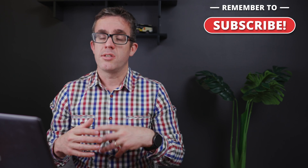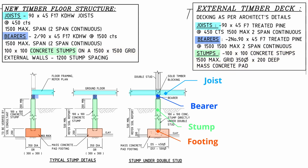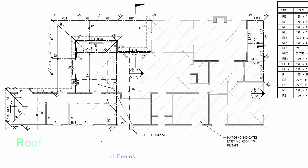On the notes we're showing that we've got stumps here, so they're just really a post in the ground with bearers and joists. Our joists and bearers in this location are an F17, which is a hardwood. On this note we can see we've got the centers of the joists, the centers of the bearers, and the locations of our stumps.